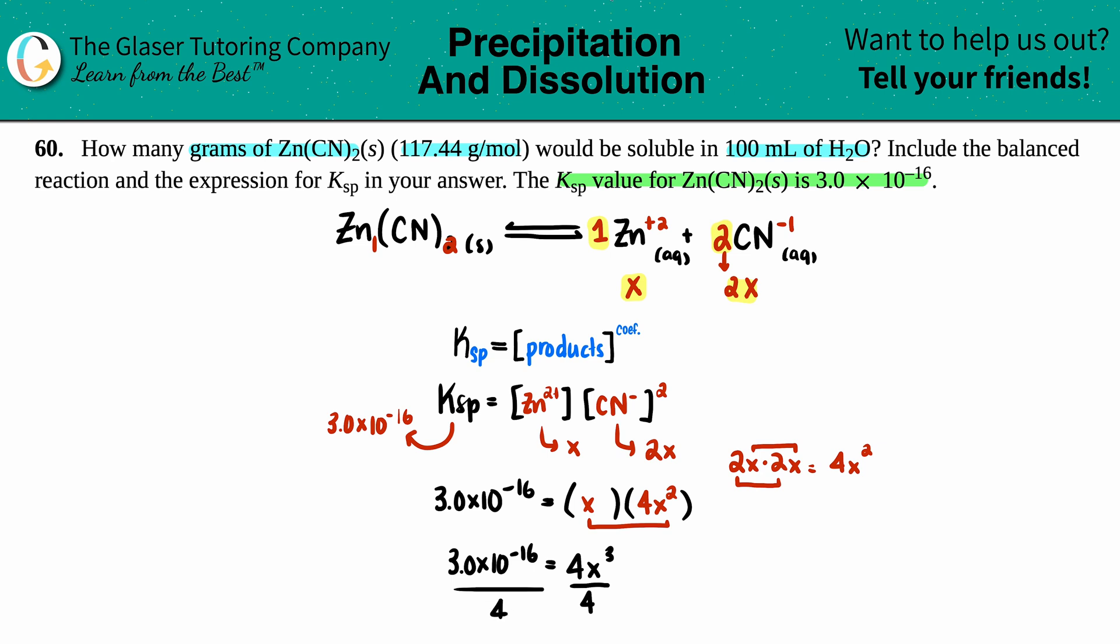3.0 times 10 to the negative 16th divided by 4 gives 7.5 times 10 to the negative 17th, which equals x³. Take the cube root on both sides, which is the same as raising to the 1/3 power. This gives x equals 4.217 times 10 to the negative 6th molarity.